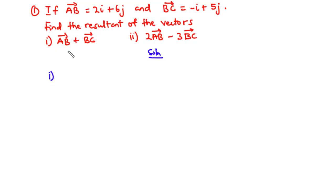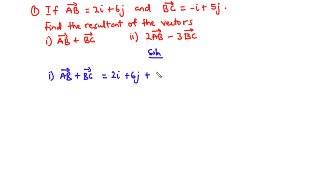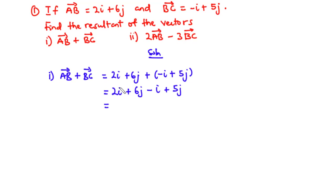For part (i), we are going to find vector AB plus vector BC by adding the X and Y components of the two vectors. So this is equal to (2i + 6j) plus (-i + 5j). Simplifying: 2i minus i gives i, and 6j plus 5j gives 11j. So the resultant of vectors AB and BC is i + 11j.